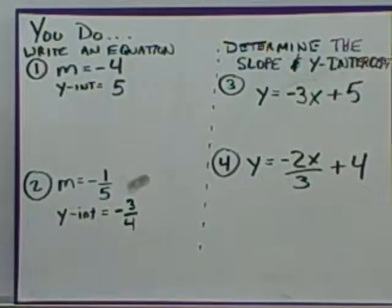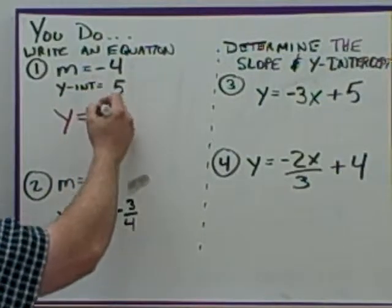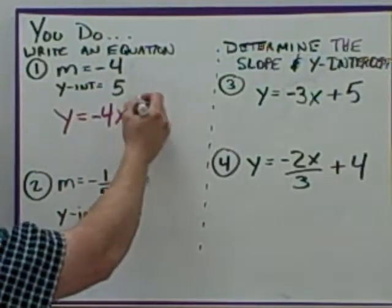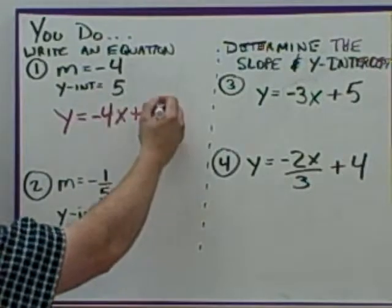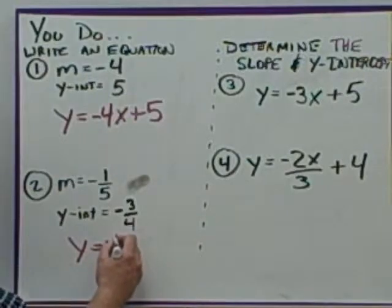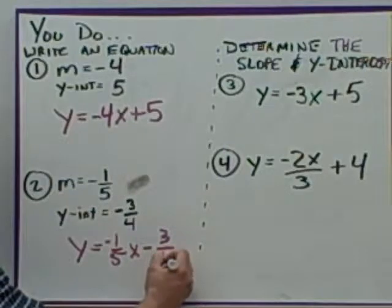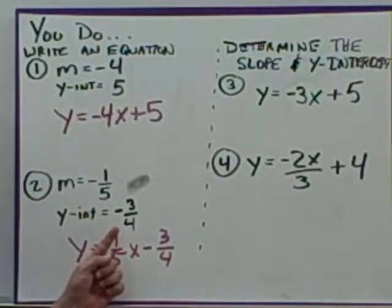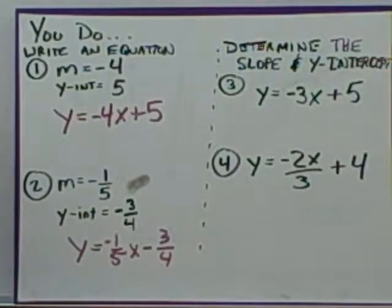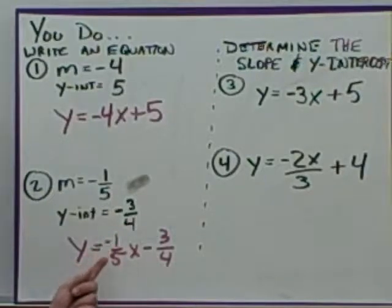Welcome back. When asked to write an equation, for the first one we have y equals negative 4x plus 5, where negative 4 is the slope and 5 is the y-intercept. For the second one, we have y equals negative one-fifth x minus three-fourths. Don't be confused by the fraction as the y-intercept — many people mistakenly make the fraction the slope. Be careful with that trap.